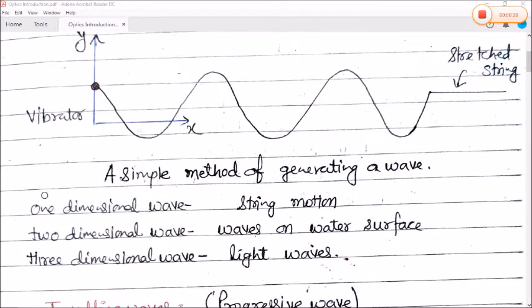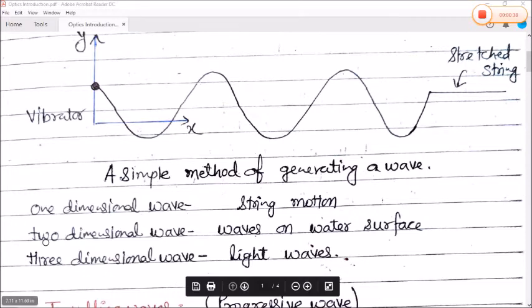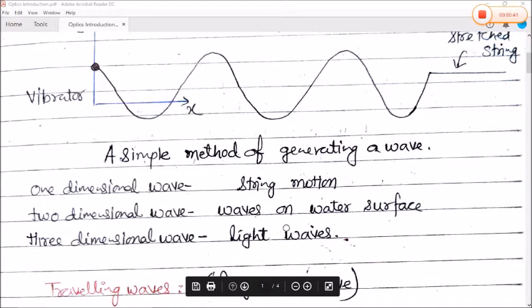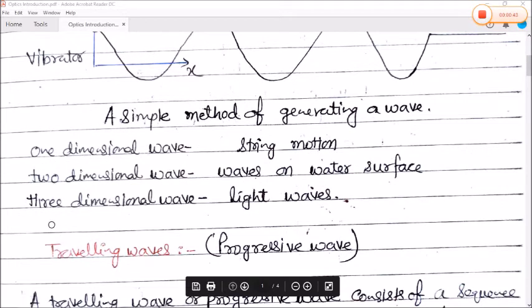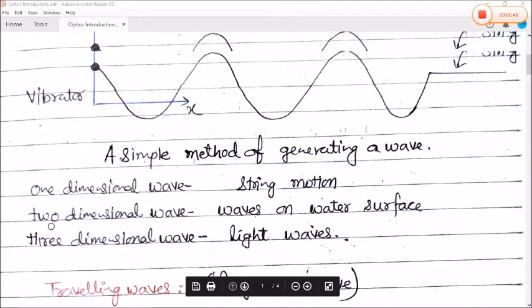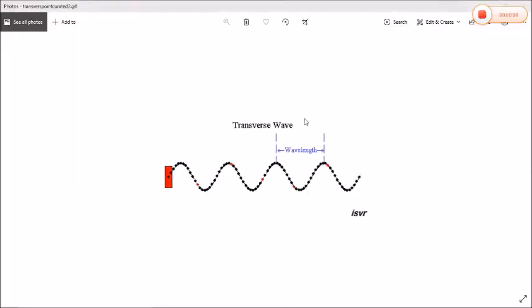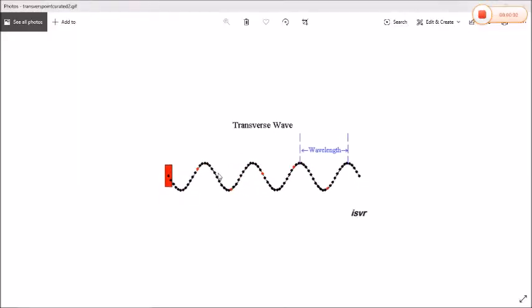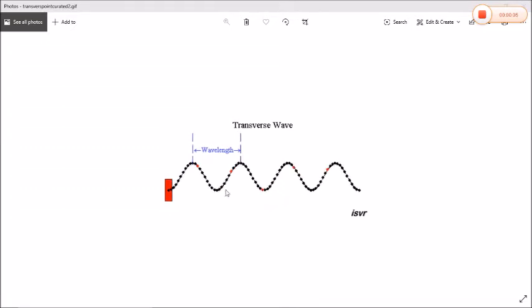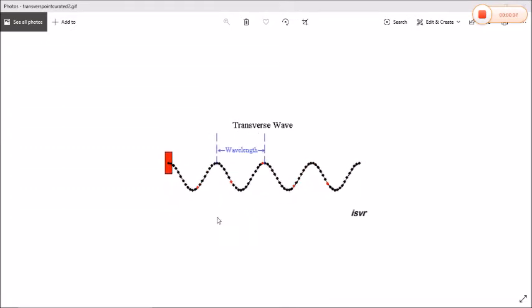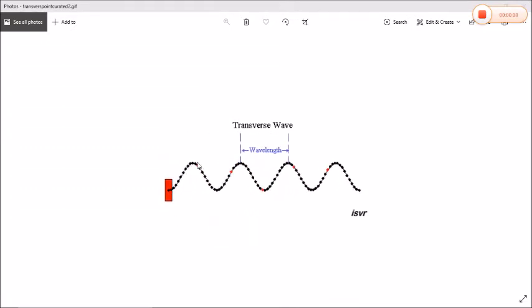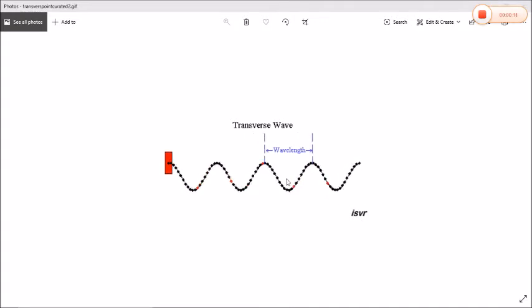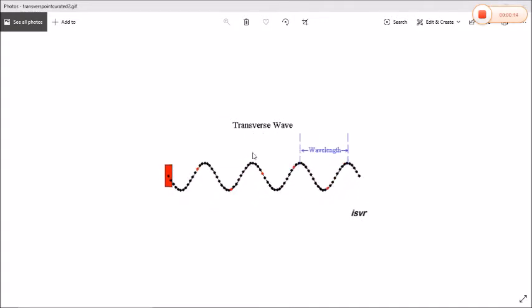Waves are generally in three types: one dimensional wave, example is string motion as we shown here; two dimensional wave, that is waves on the water surface; and three dimensional wave, light waves. So the example of wave is like this, here we see that the wave is moving forward with the example of transverse wave.